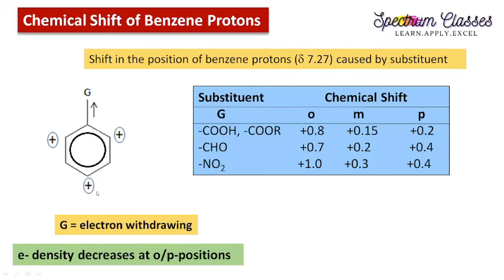The electron withdrawing group decreases electron density at the ortho and para positions, meaning they are less shielded and resonate at higher delta values. From the table, for the NO2 group the ortho position is +0.8, read as 7.27 + 0.8. At the meta position the shift is smaller, and at the para position it increases again. This representative data illustrates the pattern clearly. For more details, you can check any NMR reference book. So this is how substituent groups on the benzene ring affect chemical shift values.